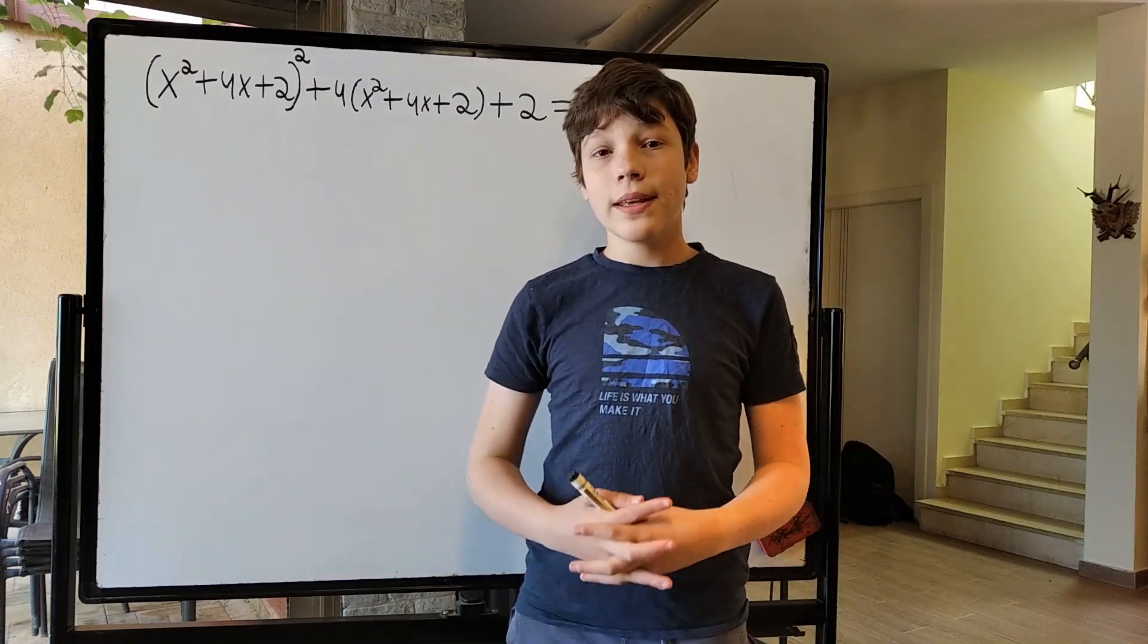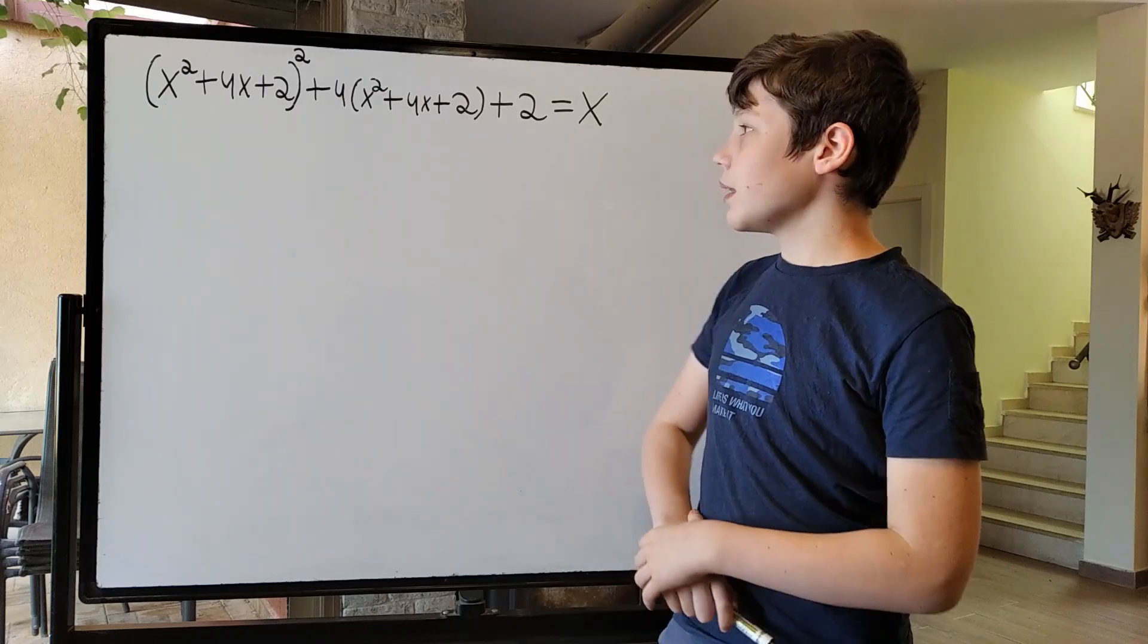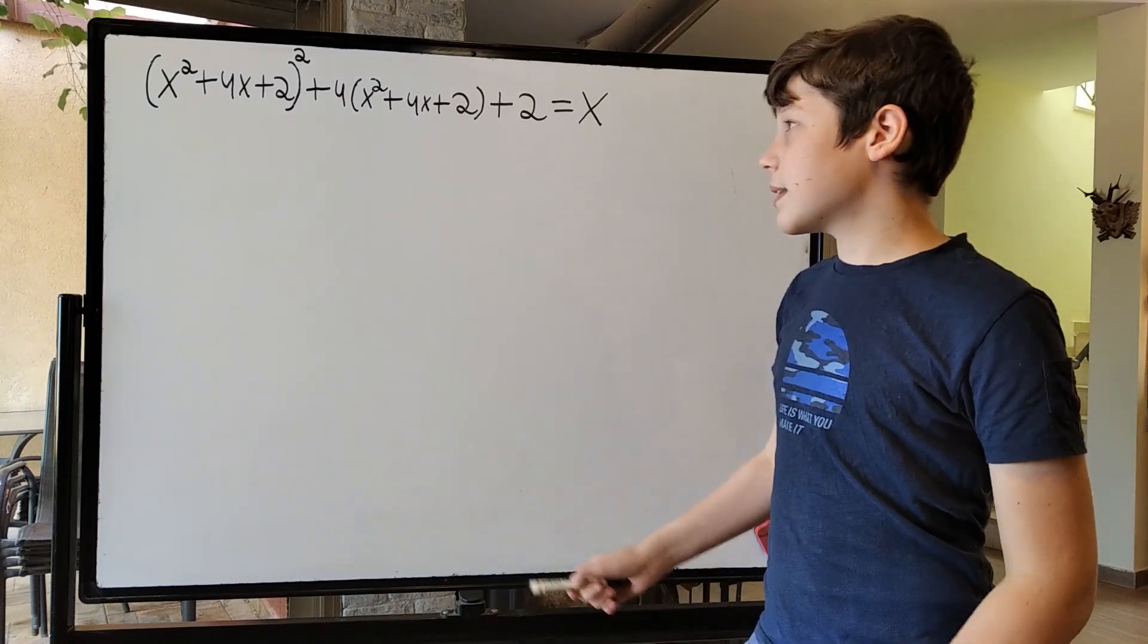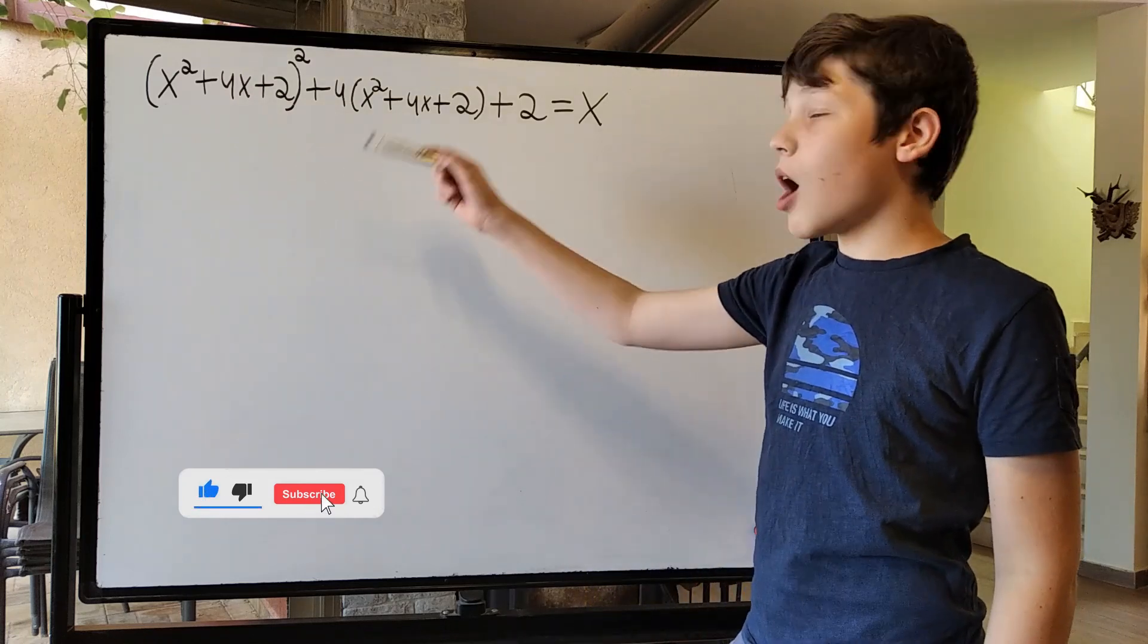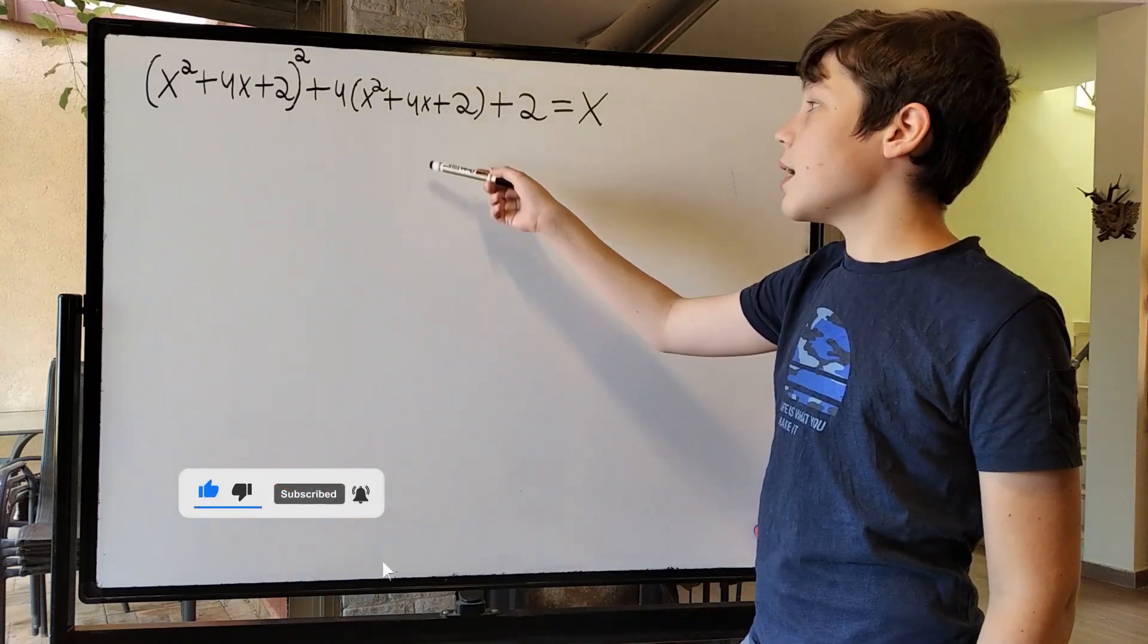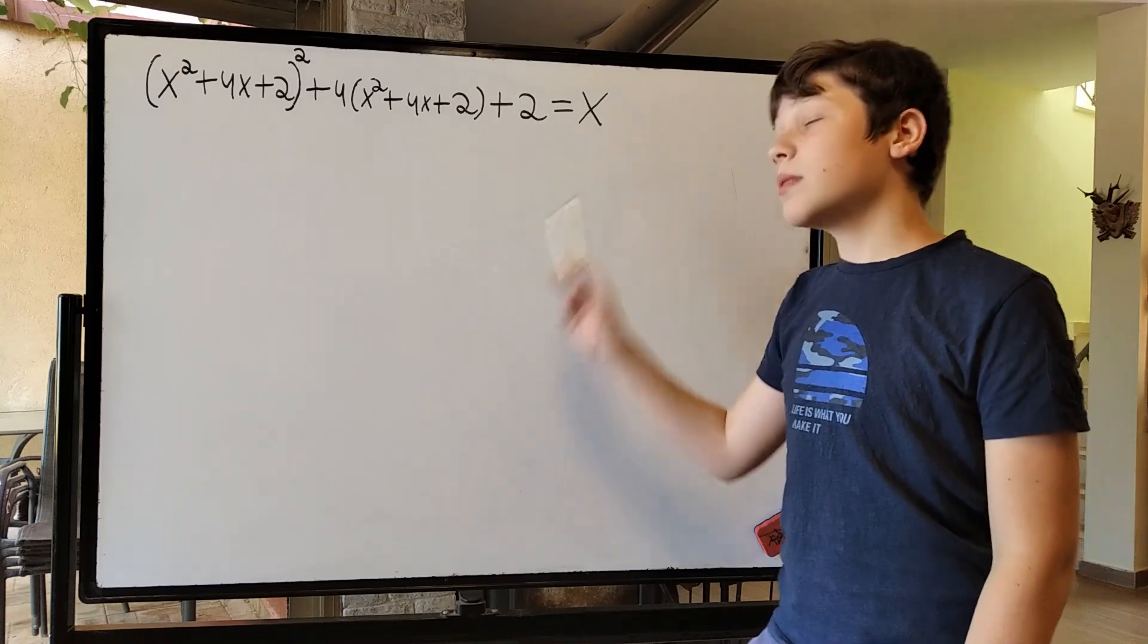Hello, welcome to this video. Today we're going to do this problem, which goes like this. So we have x squared plus 4x plus 2 all squared plus 4 times x squared plus 4x plus 2, this plus 2 is equal to x.